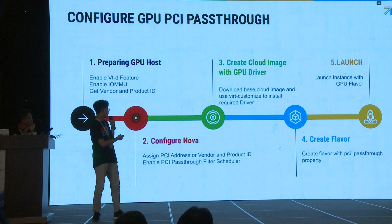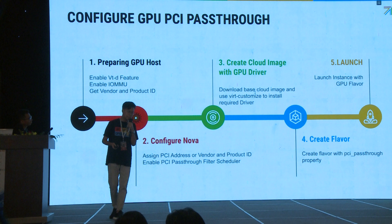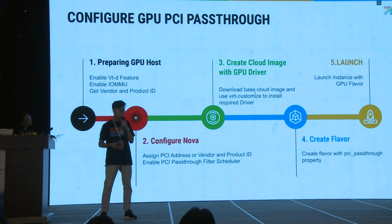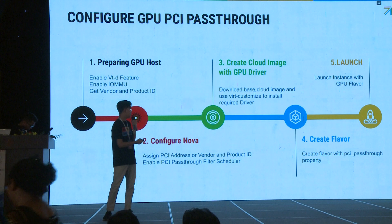Since we are using NVIDIA, you have to install the CUDA driver and cuDNN software so the cloud image will be ready to use. You can use customization to install the required driver. After you have the cloud image, you can start to create a flavor. The flavor requires a PCI pass-through property, where you define how many GPUs to consume — for example, NVIDIA T4 two units or four units. After you create the flavor, you can use your GPU instance.